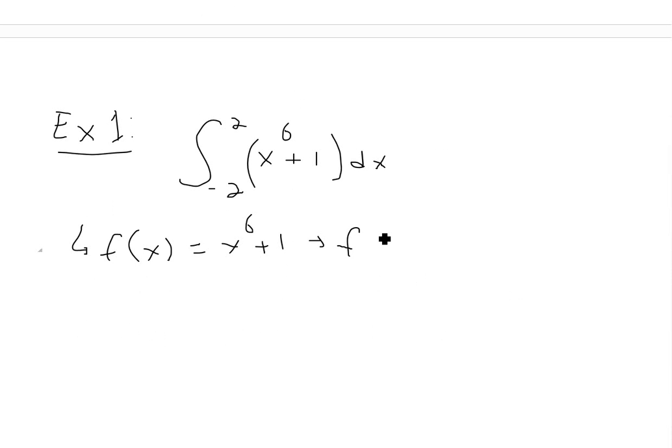So f of negative x equals negative x to the power of 6, and then plus 1. But anything to the power of an even number is just going to be positive, so this is the exact same thing as x to the power of 6 plus 1. So this is basically equal to f of x. So this is an even function right here.